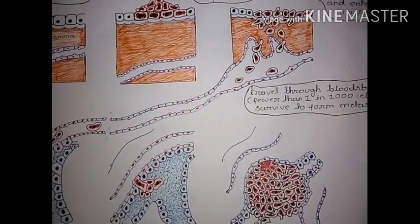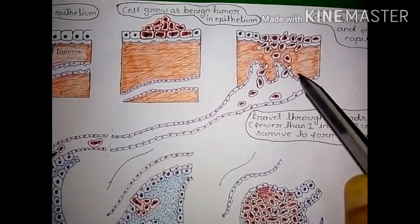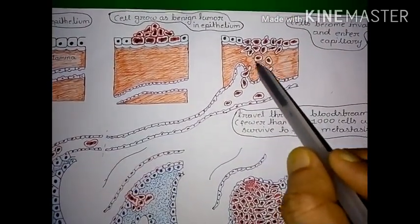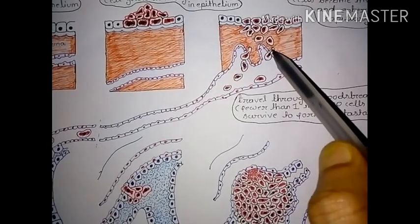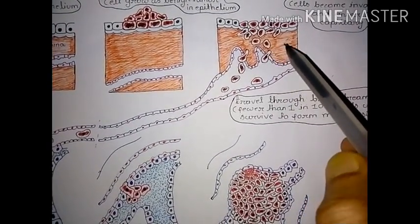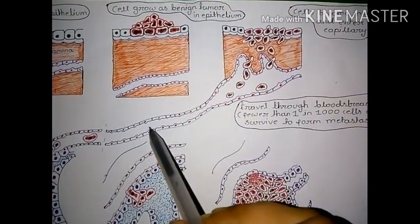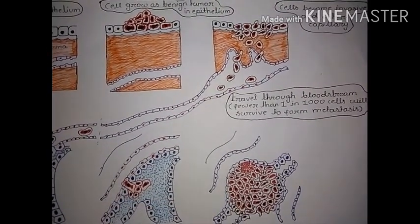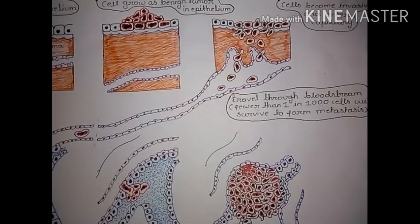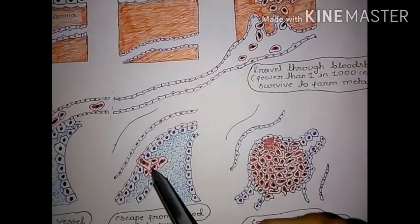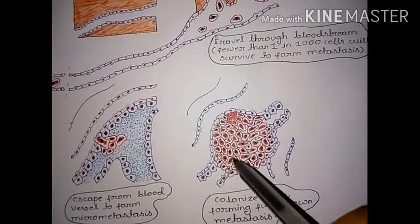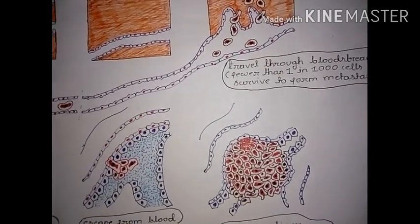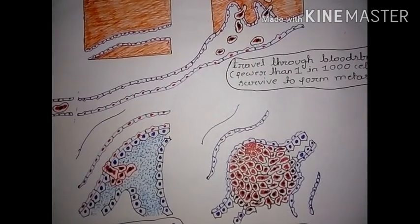Metastasis is a multiple-step process. Cancer cells first have to invade the local tissue and vessels, then move through the circulation, then attach to vessels, then leave the vessels, and ultimately establish a new colony.